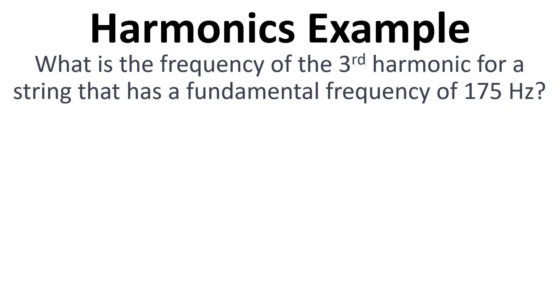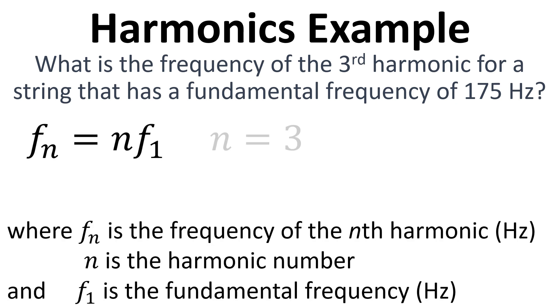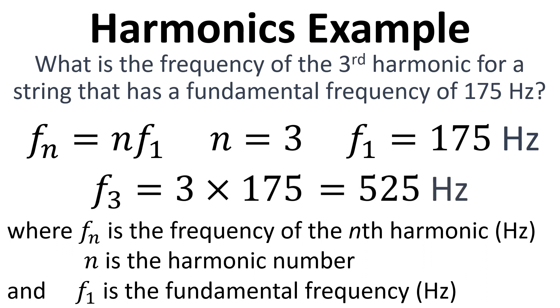Let's look at an example calculation. The question is what is the frequency of the third harmonic for a string that has a fundamental frequency of 175 Hertz. We have n equals 3 because it's the third harmonic. F1 equals 175 Hertz because that's the fundamental frequency. Putting those numbers into the equation gives us 525 Hertz. So that's the frequency of the third harmonic.